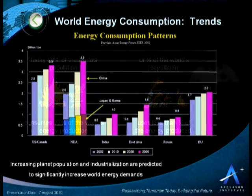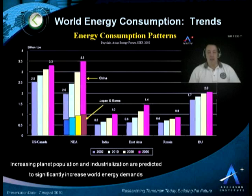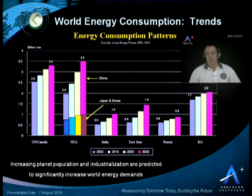This is not just happening in one part of the planet. We see energy consumption along the left axis. If we take a look at the trends over a 30-year period — 10 years past and 20 years future — in the U.S. and Canada, Northeast Asia including Japan and Korea, India, East Asia, Russia, and the European Union, every region is projected to increase their energy consumption, in some places like East Asia and China on a very, very dramatic rate.